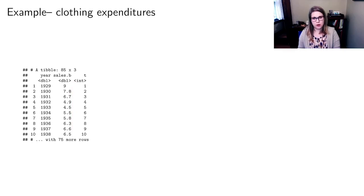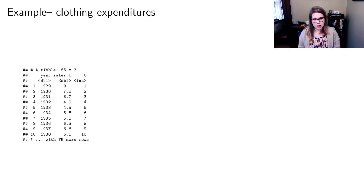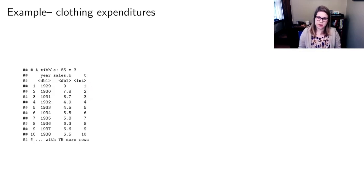In this case they were collected at evenly spaced time points of years. So we could use the year — 1929, 1930, 1931 — or sometimes with time series we'll label them as time point one, time point two, time point three, and so on.